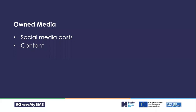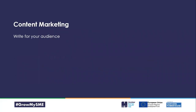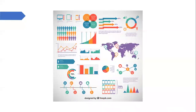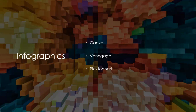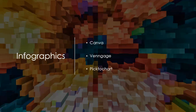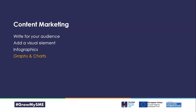For content in your owned media: always write with your audience in mind and always have a visual element. Infographics remain really powerful - you can use Canva, Piktochart, or Venngage. If you're trying to portray something best shown visually, infographics are a clever and powerful way. A lot of these tools are free. As the old classic goes - a picture tells a thousand words. Also think about using graphs and charts in your content.